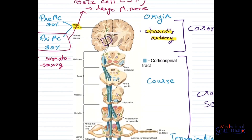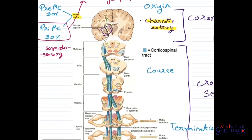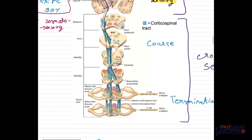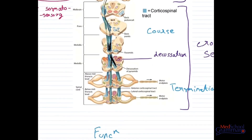If there is a hemorrhage in Charcot's artery and the posterior limb of the internal capsule is occluded, there will be a lesion in the corticospinal tract and its functions will be impaired. After exiting from the posterior limb of the internal capsule, the fibers move down through the midbrain, pons, and medulla, where they form the pyramids. In the lower part of the medulla, they cross over to the other side — this crossing over is called decussation.